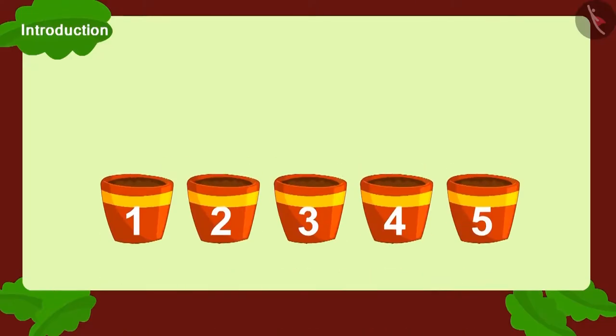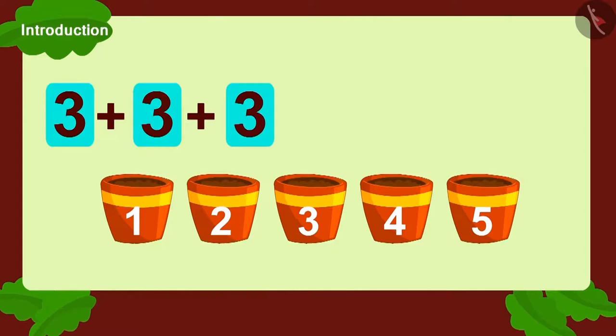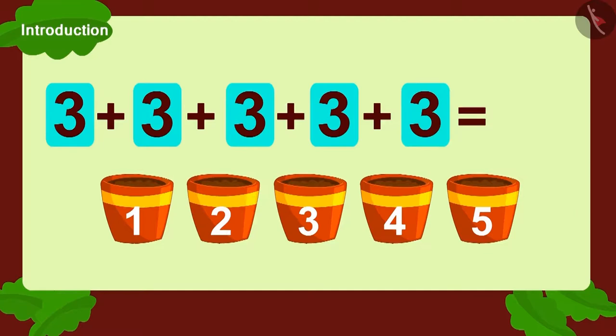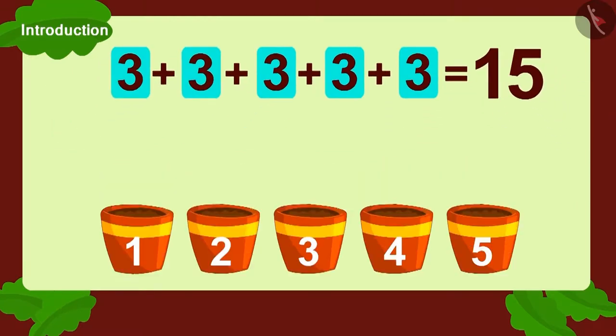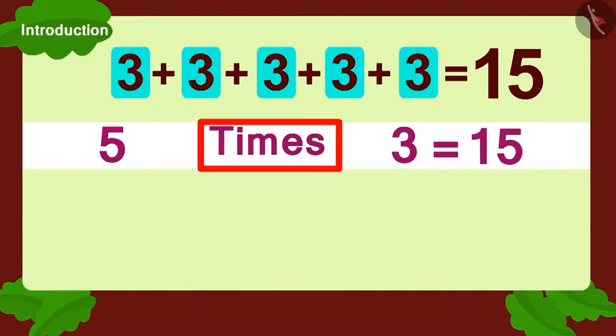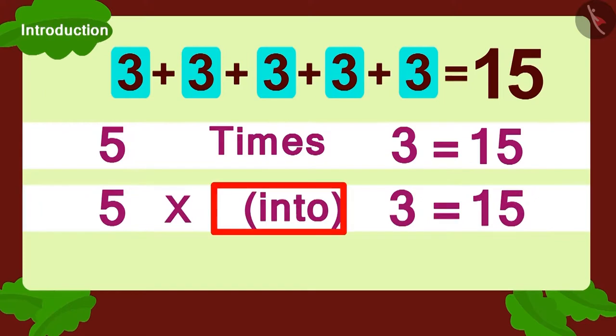Yes. We can write it as three plus three, plus three, plus three, and finally one more three equals to fifteen. Or five multiplied by three. Or five multiplied with three. We can write it like this.